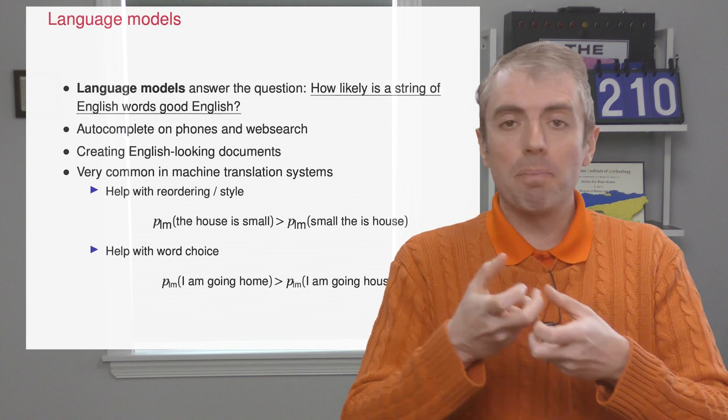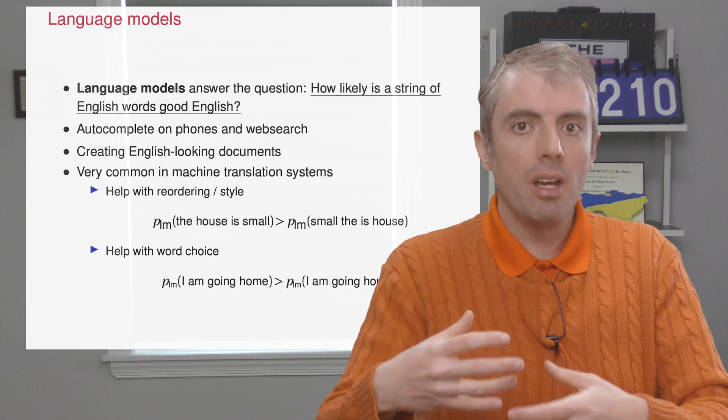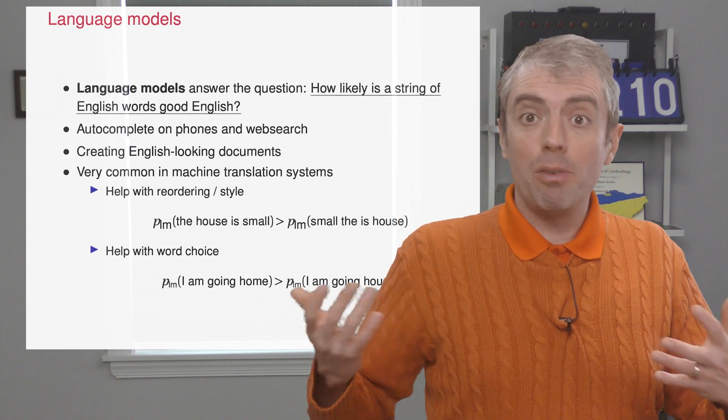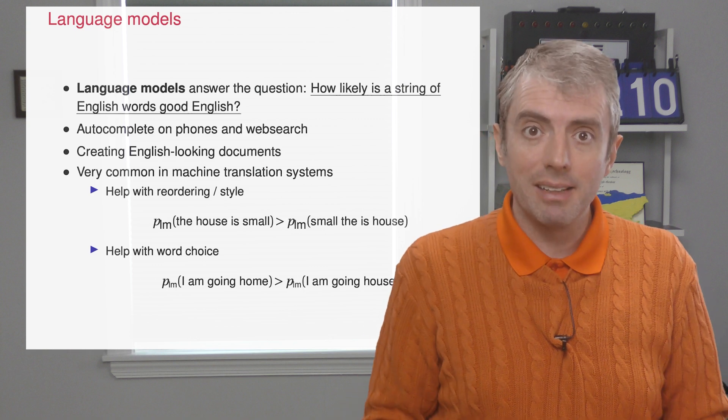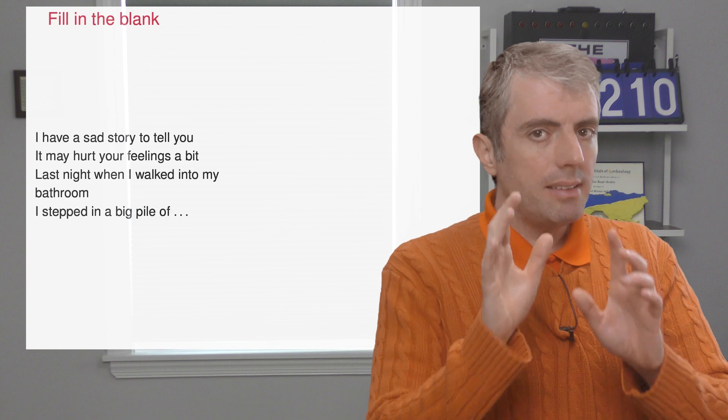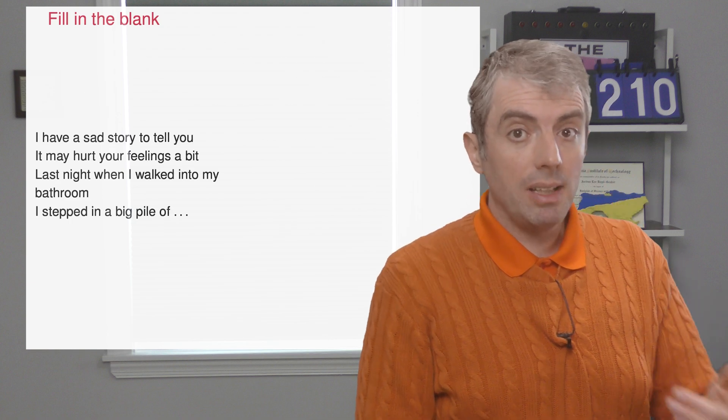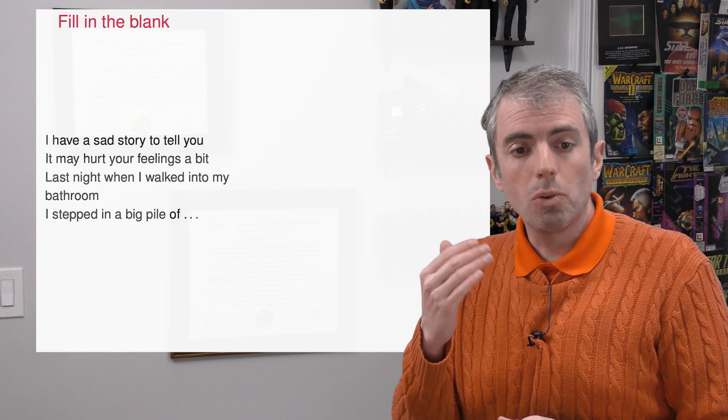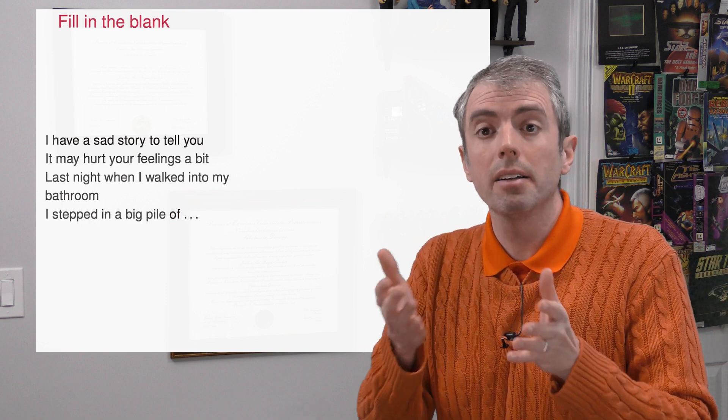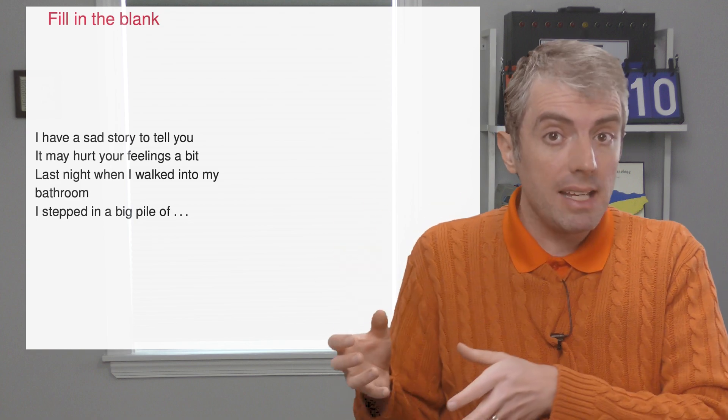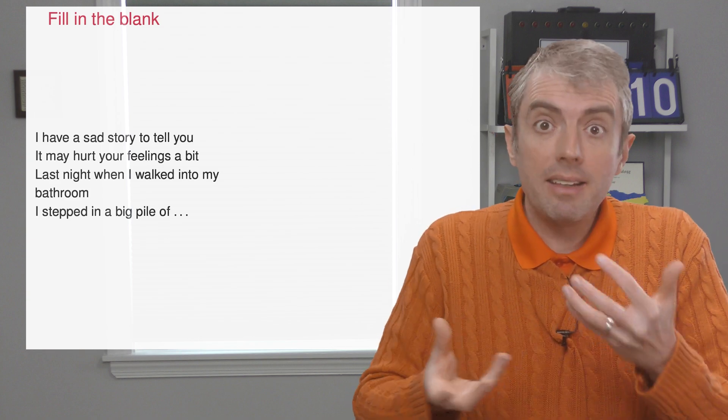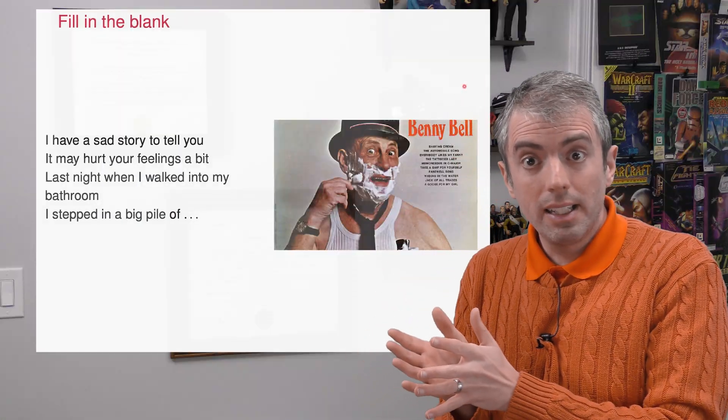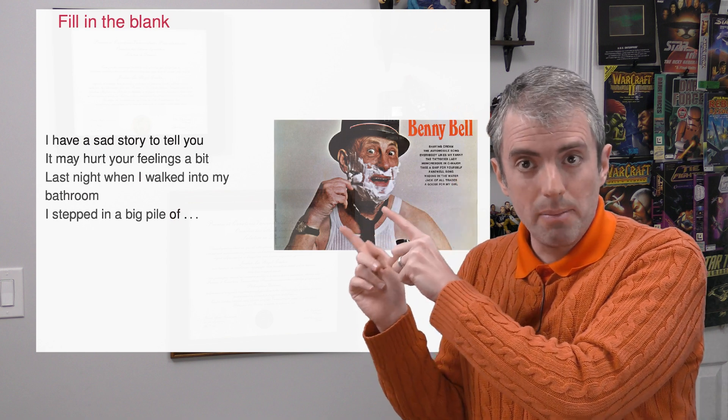A language model takes a prefix or context of a sentence and spits out a distribution over what the next token observation will be. These are used for autocomplete, machine translation, and for some of the cool generative AI applications that we've seen recently. We'll be talking more about those later. This is all very abstract. So let's be concrete here and go through an example. Let's say that you have the song lyric from Binnie Bell: I have a sad story to tell you, it may hurt your feelings a bit. Last night when I walked into my bathroom, I stepped in a big pile of... So what we're going to do is try to predict what the next token could be and think about the clues and the data that we could use to predict what the next token could be. And of course the correct answer is shaving cream, the title of the Binnie Bell song that we're quoting here.